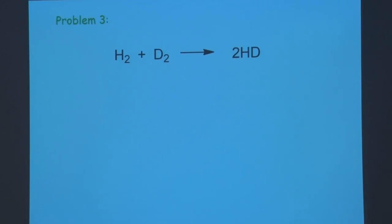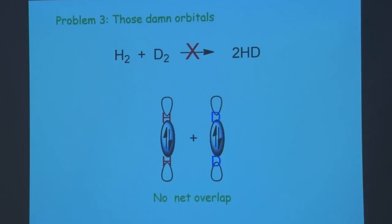The third problem is more subtle. Consider a seemingly balanced reaction: hydrogen and deuterium making two equivalents of HD — the bond energies are approximately equal, the number of molecules is the same. But this is not going to happen under any reasonable condition. That's because the third problem is orbitals — there's no net overlap, no impetus for this to occur. This gives rise to symmetry rules for reactions, where perfectly reasonable-seeming reactions are forbidden for what appears to be an opaque reason.